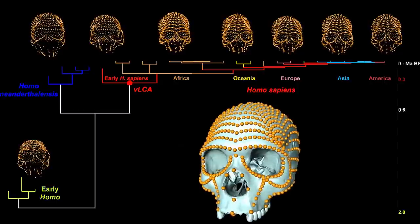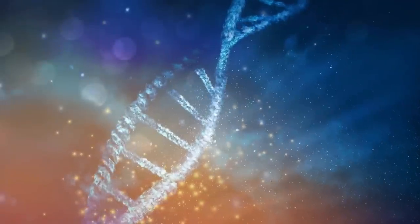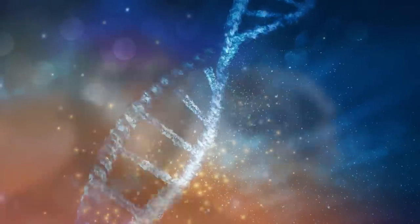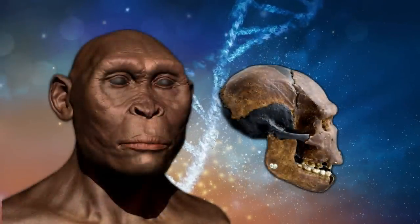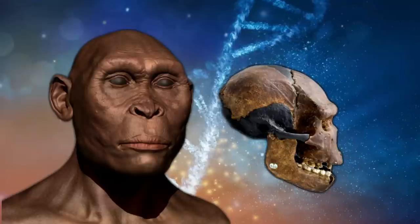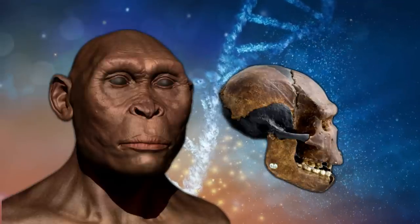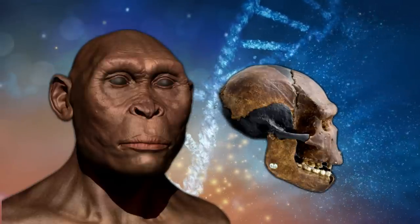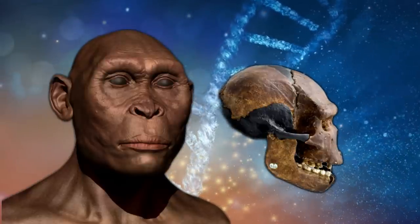Until recently, the story of our origins was thought to have been settled. Homo sapiens evolved in East Africa about 150,000 years ago, became capable of modern behavior some 60,000 years ago and then swept out of Africa to colonize the world, completely replacing any archaic humans in our path.